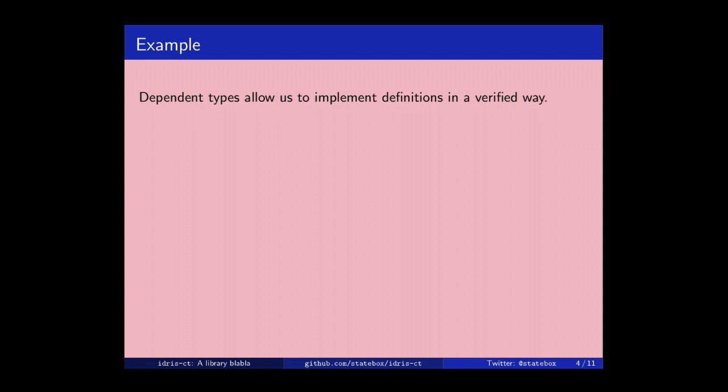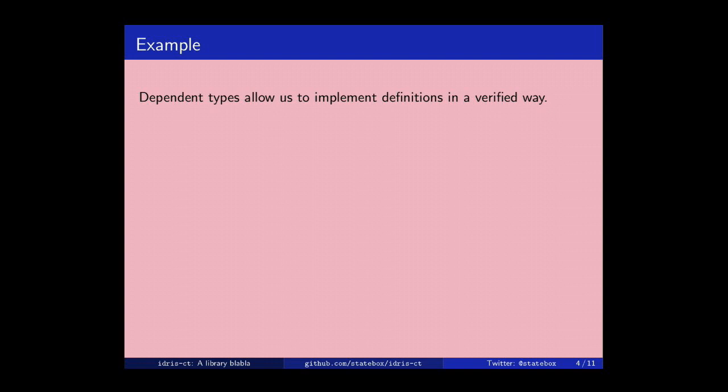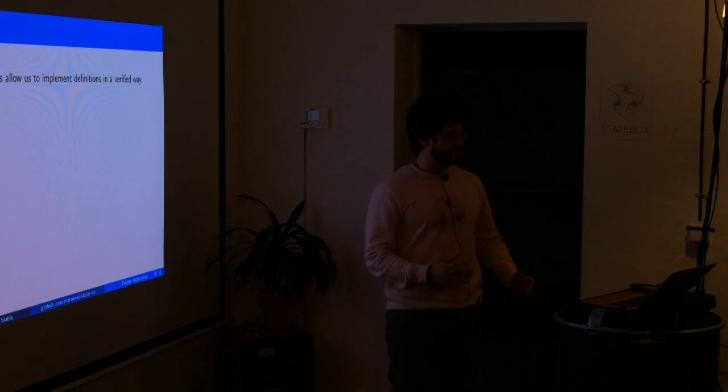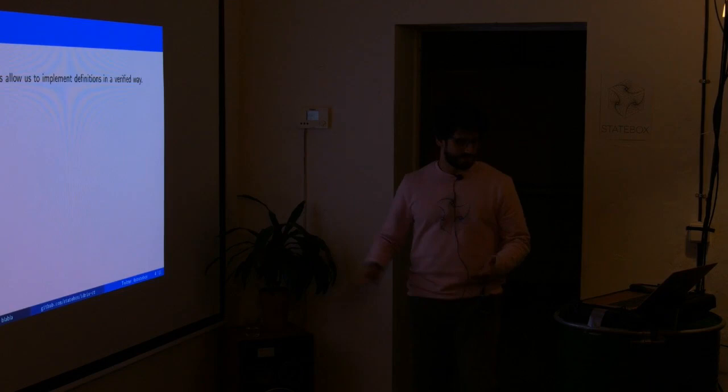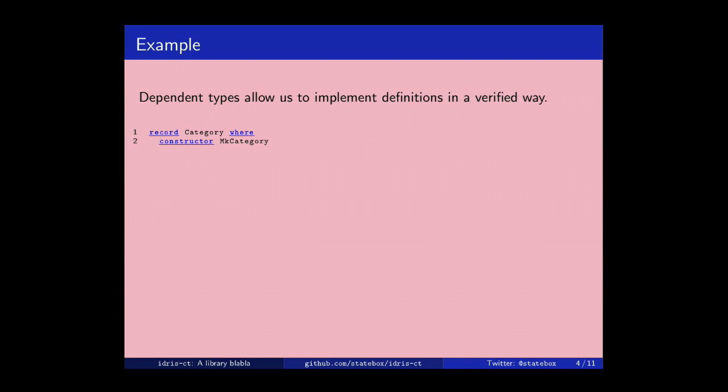So this is the idea. With the dependent types, we can implement definitions in a verified way. Namely, we can basically just open McLane, which is the to-go reference if you want to learn category theory, and just look at definitions and implement them like verbatim. That's the idea. That's what we wanted to do. So we wanted to adopt a very vanilla approach, literally. So I'll show you an example.